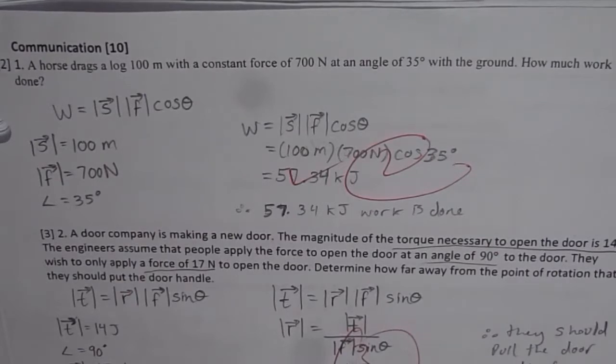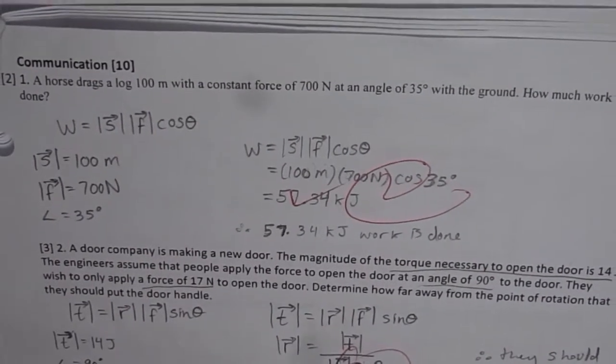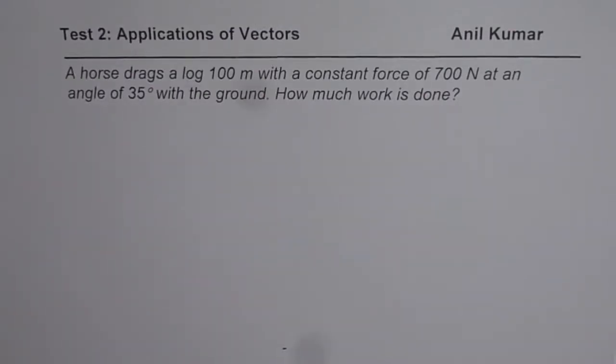The very first one is about the horse dragging a log. Let's discuss this one now. The question is, a horse drags a log 100 meters with a constant force of 700 newtons at an angle of 35 degrees with the ground. How much work is done?